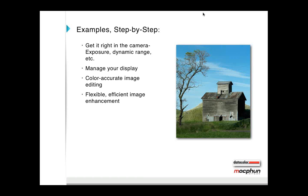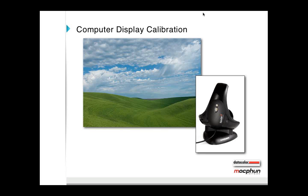Computer display calibration involves controlling hue, saturation, and lightness. You want to see the colors be correct, saturation levels correct, and the brightness — both at the top and bottom end of your dynamic range — to be accurate, so that you're editing to the right destination. Display calibration is very simple.